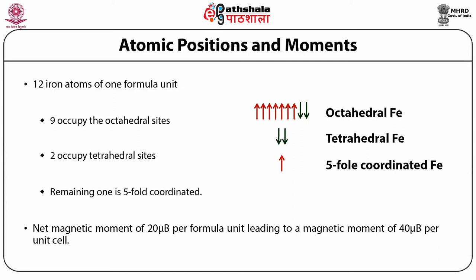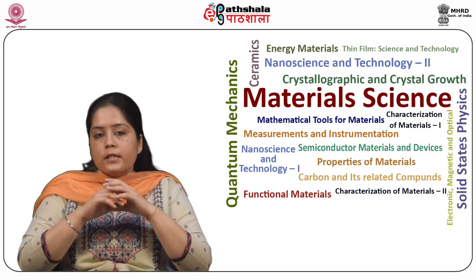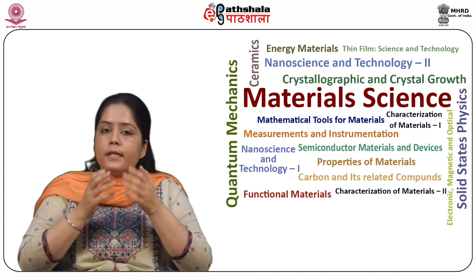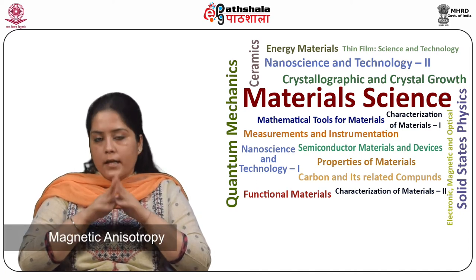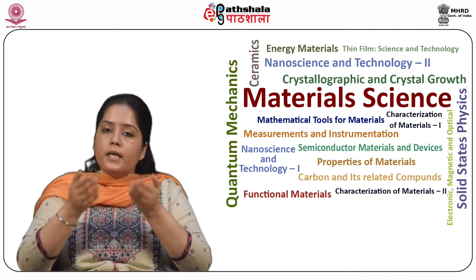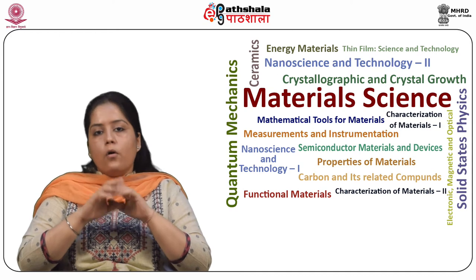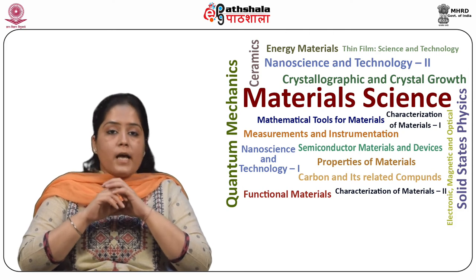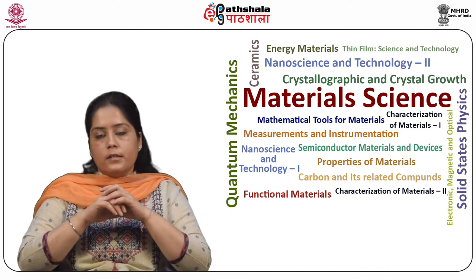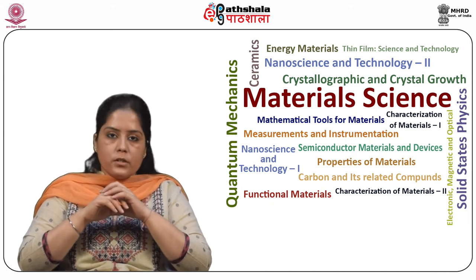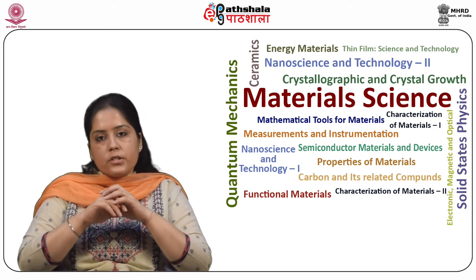This leads to a magnetic moment of 40 µB per unit cell. Regarding magnetic behavior: hexagonal ferrites have a high degree of magnetic anisotropy and magnetize relatively easily along the 0001 direction or c-axis of their unit cell. They are categorized as hard ferrites with coercivity between 50–100 kA/m depending upon microstructure and composition.